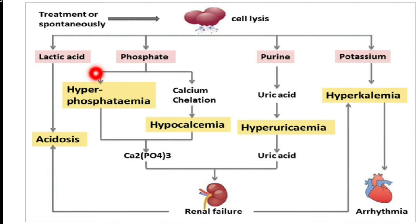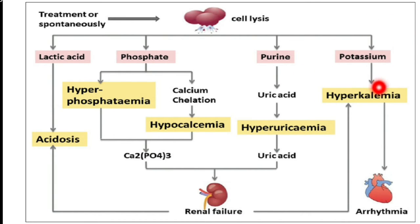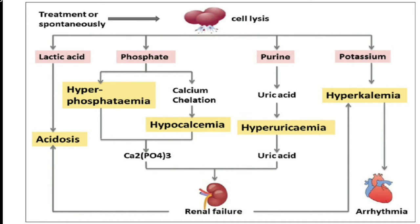Lactic acid overproduction can cause acidosis. When the potassium level is abnormally high, it leads to hyperkalemia, which is a very life-threatening condition. It leads to cardiac dysrhythmias and ECG abnormalities.